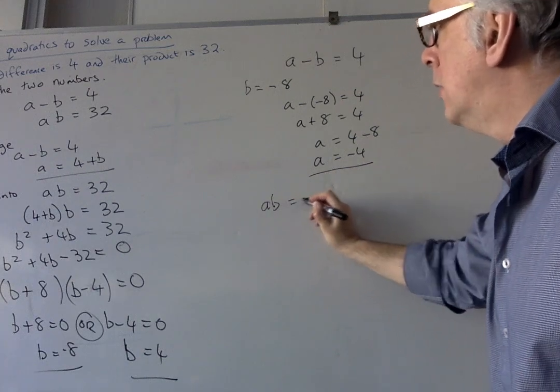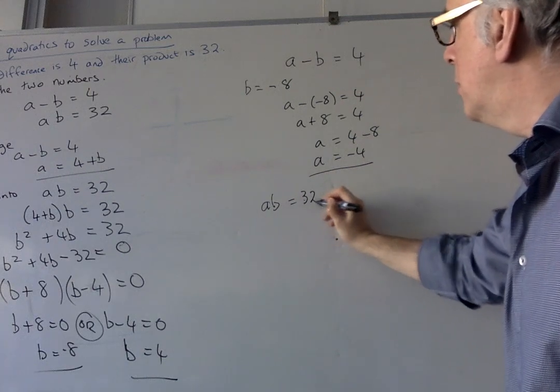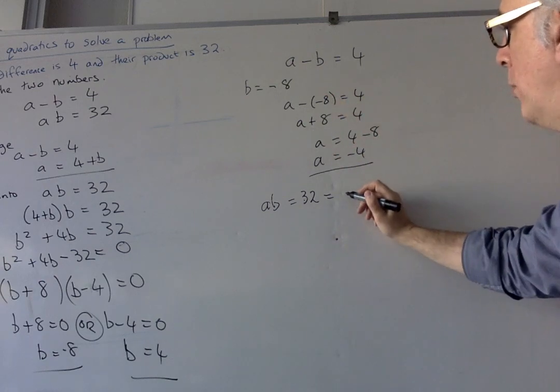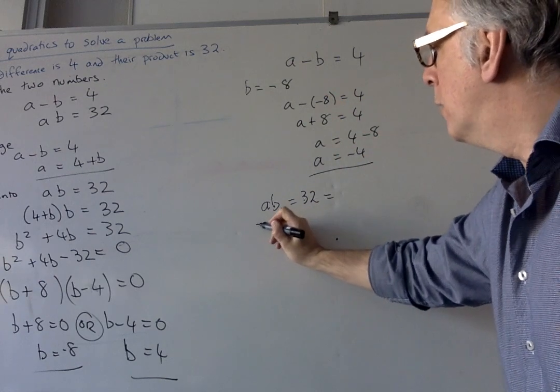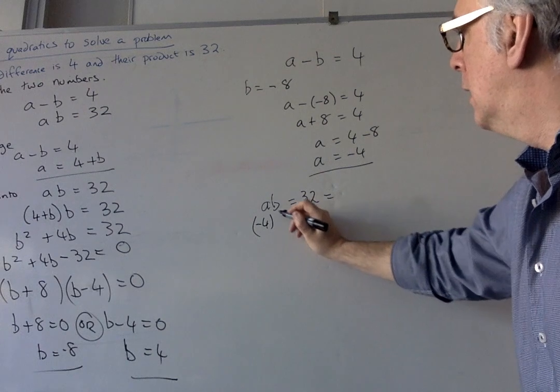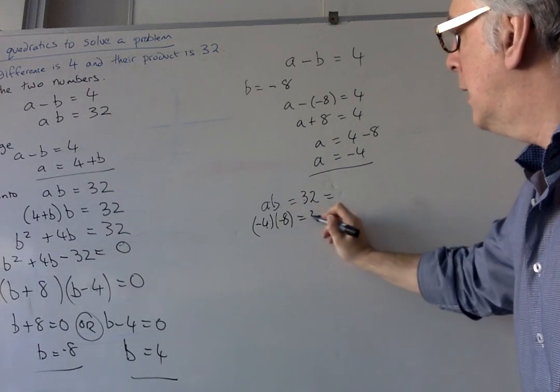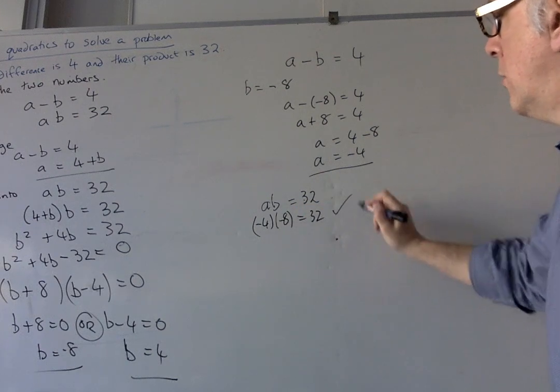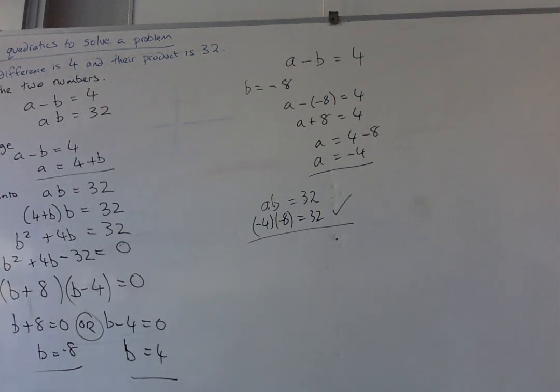We also know that the product should be equal to 32, so let's just check that out with our numbers. A is minus 4, B is minus 8. That is also 32. So I know that is one of the solutions. But of course, B is not just minus 8.